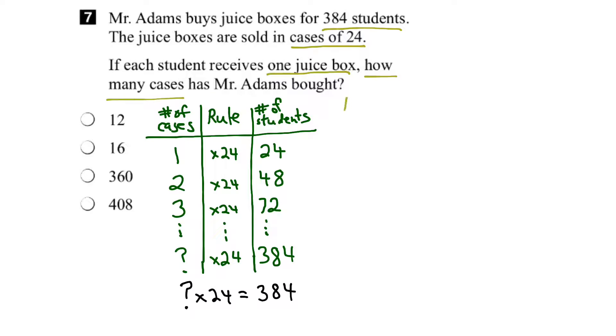So, let's try that. Let's say we start with the number of students. And we apply some rule and we'll end up with the number of cases. So, in this case, if we had 24 students, it would require 1 case. 48 students, we'd need 2 cases. 72 students, we'd need 3 cases. Again, if we did it this way, it's going to take us a while. But the goal is to, when we had 384 students, how many cases would that require?